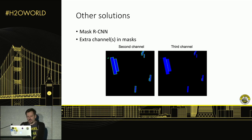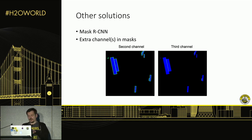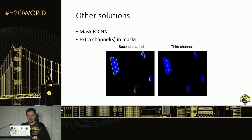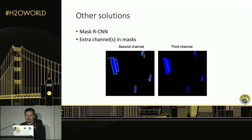Our team also tried to implement Mask R-CNN and it worked for them. One smart team applied an extra channel to the mask because the model was struggling to identify borders — they provided borders as a second channel. And because the model had difficulty identifying the split between two ships close together, they provided that boundary line as a third channel. I don't have details on the exact technical realization, but it worked.